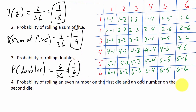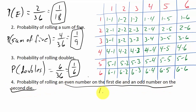Now: the probability of rolling an even number on the first die and an odd number on the second die. We'll call that event E. So we need an even on the first die and an odd on the second die.